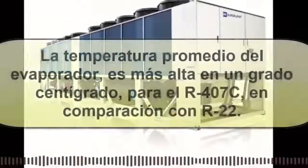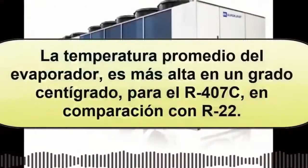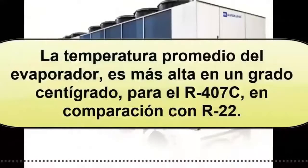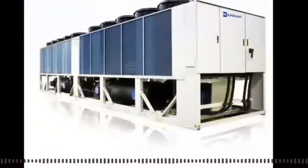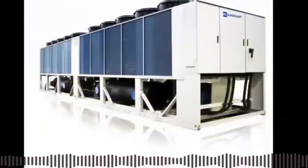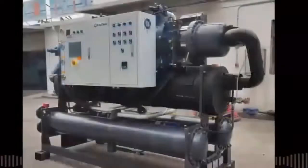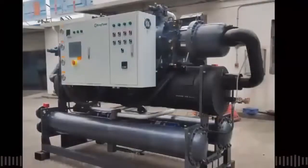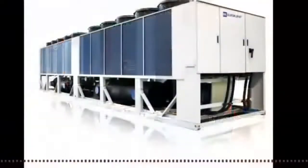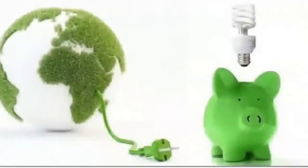The average evaporator temperature is 1 degree Celsius higher for R407C compared to R22. Cooling capacity is approximately 5% higher for R407C compared to R22. The energy efficiency index is about 0.5% higher for R407C than R22 on average.